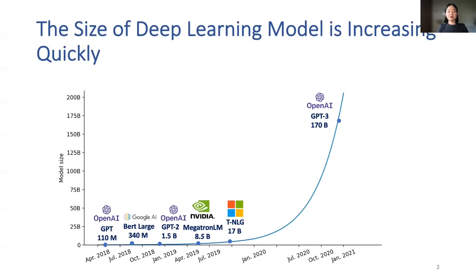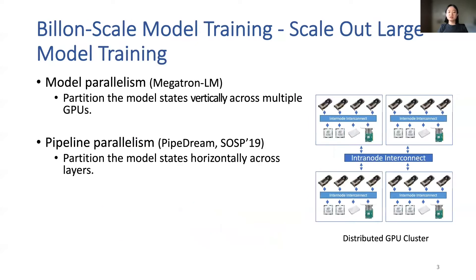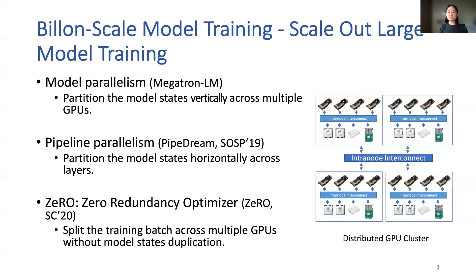The size of deep learning models is increasing quickly. The most recent release, GPT-3, has over 170 billion parameters. However, for models with multi-billion parameters, a single GPU doesn't have enough memory to fit the model along with the training parameters. Existing works use distributed GPU clusters to scale out large model training. When a model does not fit device memory, model parallelism and pipeline parallelism split the model among processes in vertical and horizontal ways, respectively.